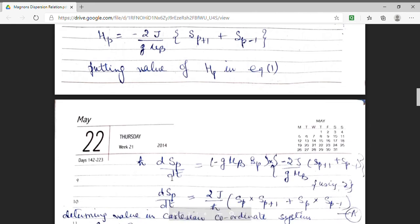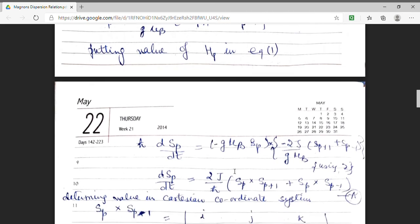hp. And I am using this expression of rate of change of angular momentum. And here, I have put it the value of mu p to be equal to minus g mu b sp. Now, I have to solve this expression.